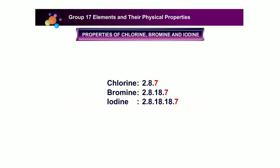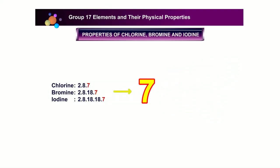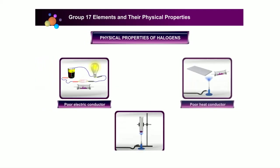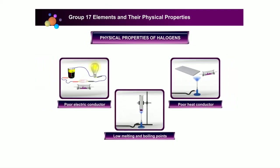Look at the electron arrangement of chlorine, bromine, and iodine. From the electron arrangement of fluorine, bromine, and iodine, we can see that the valence electron for elements in group 17 is 7.